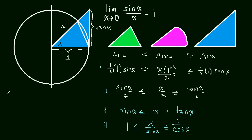Now let's take the reciprocal of this inequality. When you take the reciprocal of an inequality you have to flip the signs. So we get 1 is greater than or equal to sin x over x — and maybe now you see why we took that reciprocal, because we're left with sin x over x, which is the limit we're trying to find — which is greater than or equal to cos x.